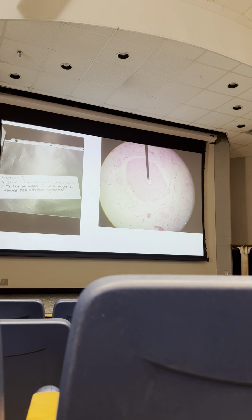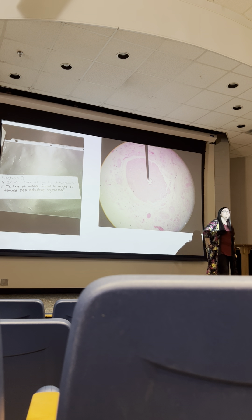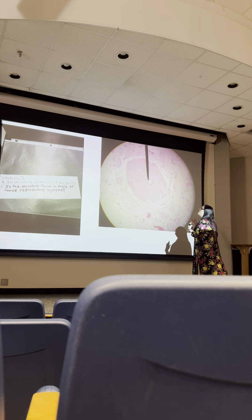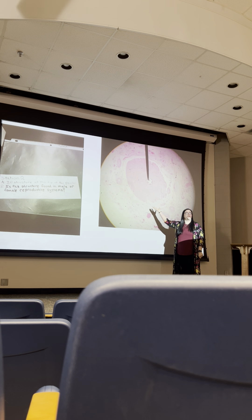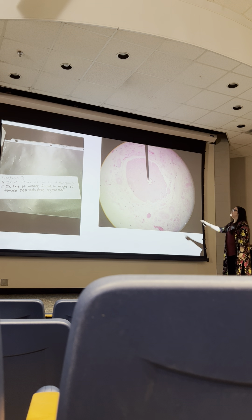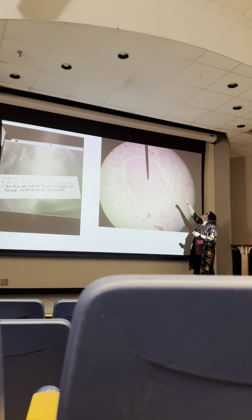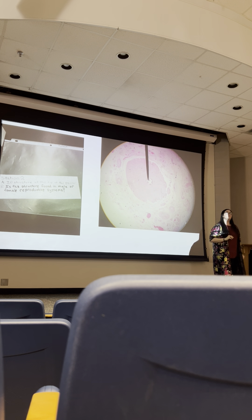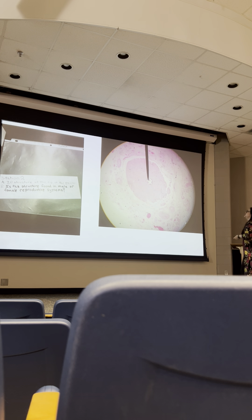Exam practice: a structure showing a tiny star-shaped lumen surrounded by a lot of smooth muscle is the vas deferens. A ureter also has a star-shaped lumen but is much larger; this is small, so it's the vas deferens. You can also identify it by the surrounding pampiniform plexus vasculature. This structure is found in the male reproductive system.